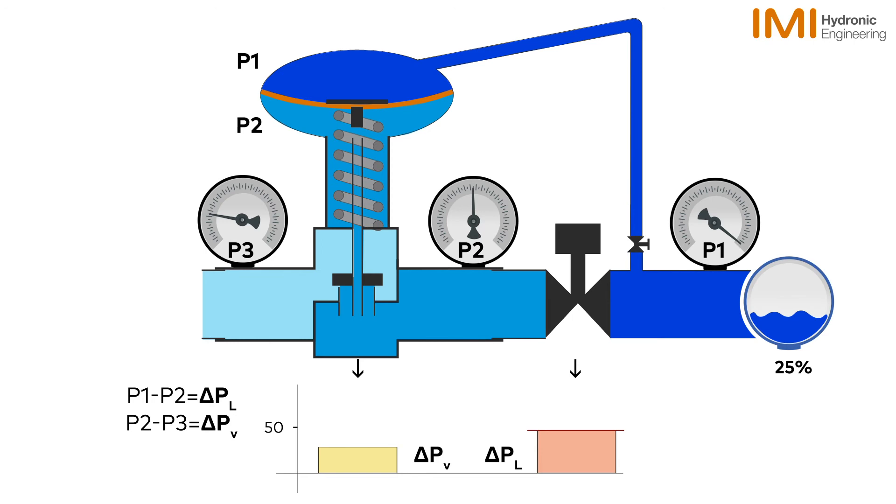Upon an increase in flow, the valve acts in reverse. As delta PV increases, the valve will act by opening to meet delta PL at set point.